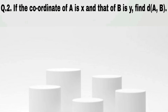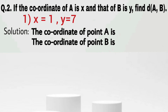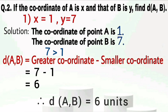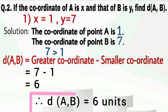Question number 2: if the coordinate of A is X and that of B is Y, find the distance between A and B. For the first case, X equals 1 and Y equals 7, meaning the coordinate of point A is 1 and the coordinate of point B is 7. Since 7 is greater than 1, the distance between A and B equals greater coordinate minus smaller coordinate: 7 minus 1 equals 6. So the distance between A and B is 6 units when X equals 1 and Y equals 7.